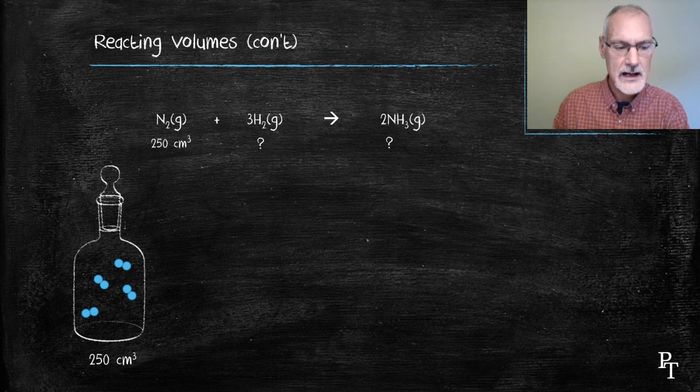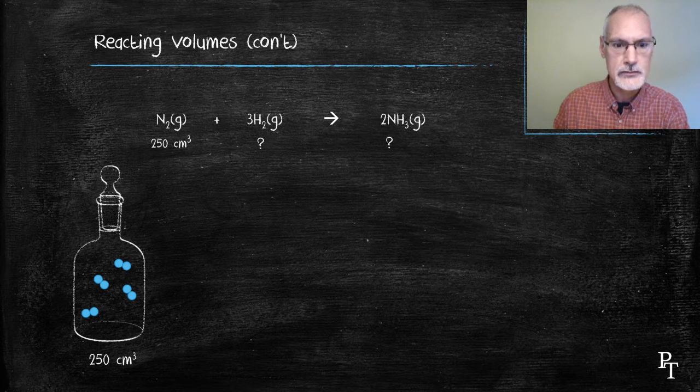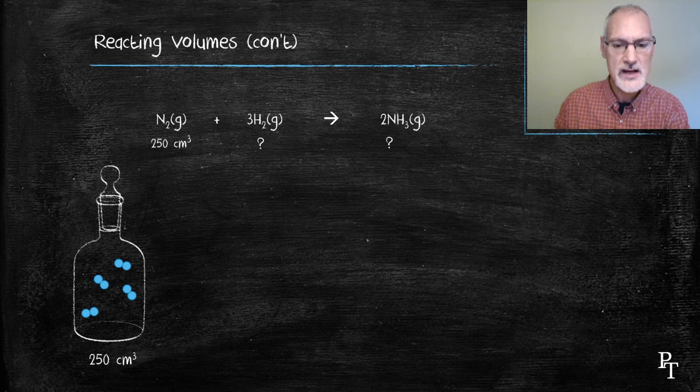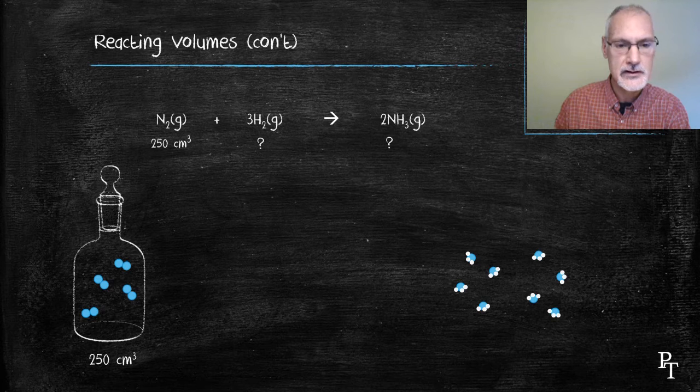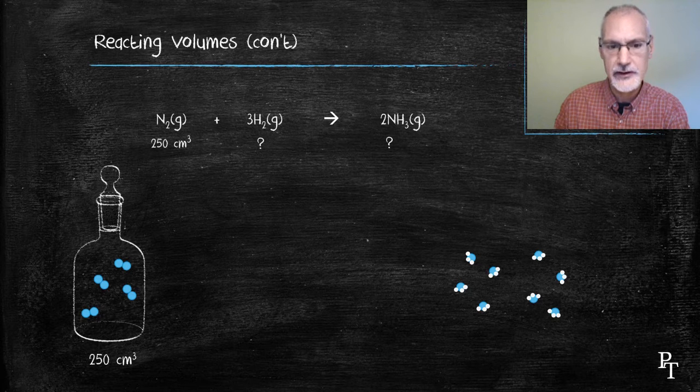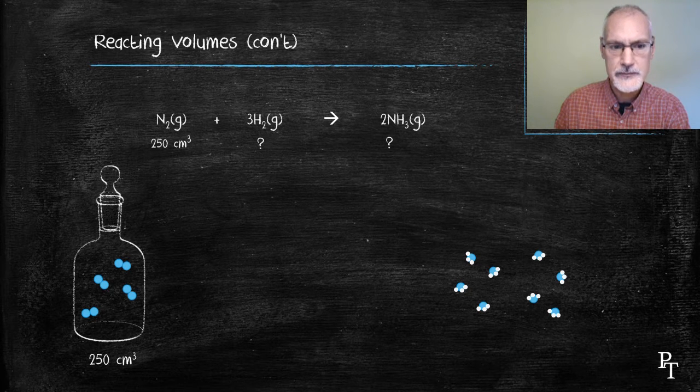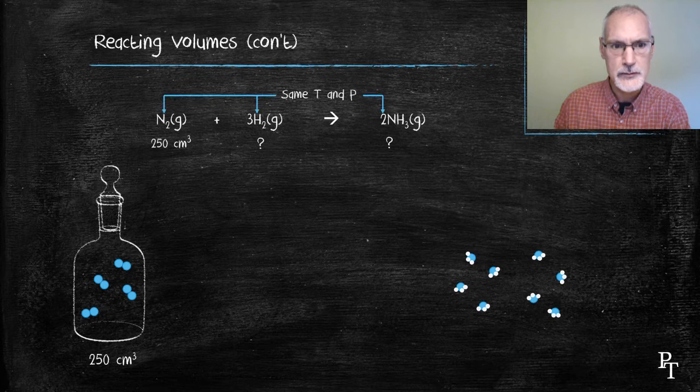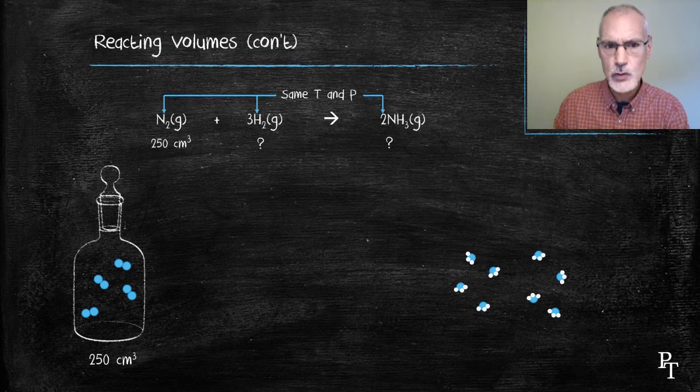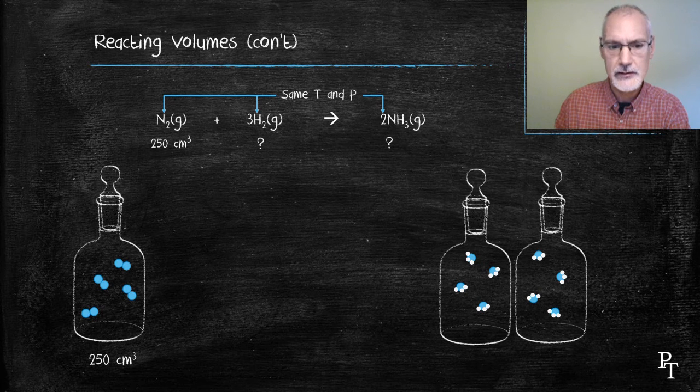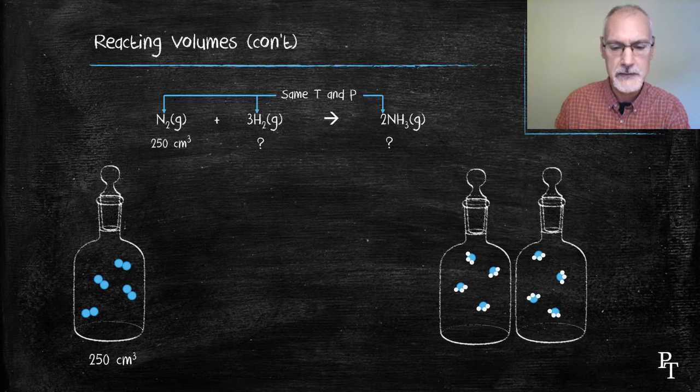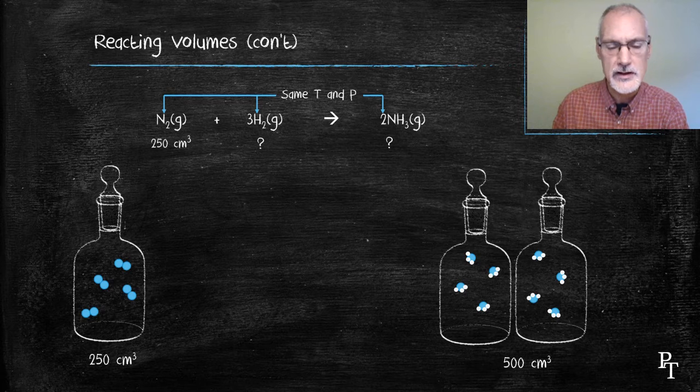Now when that reacts because of the one to two ratio I would produce twice as many ammonia so four particles of nitrogen would end up producing eight particles of my ammonia. All of these are at the same temperature and pressure so since I have twice the number of particles produced, eight, I would have to have twice the volume produced so I would have 500 cubic centimeters of ammonia.